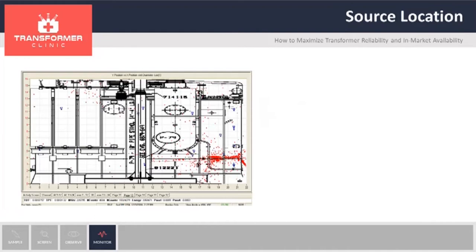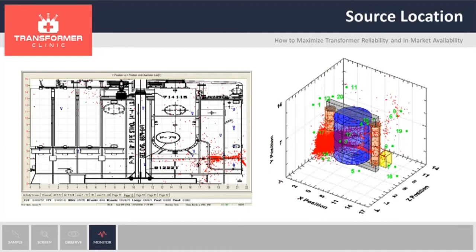At the end of monitoring, you get something like this. One representation is two dimensions, where we can actually overlay the drawing of the transformer. If there is an active fault, it will be shown as a red dot. If you have a concentration of dots, we call that a cluster — that is typically a fault located on the transformer. In this case, you can see it's on the lower right corner. The other representation is a three-dimensional location where you can see the coil and the core, with red dots indicating the fault.